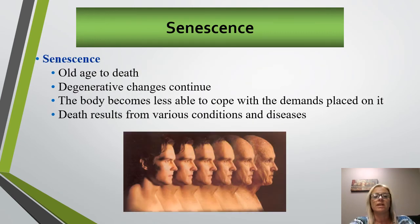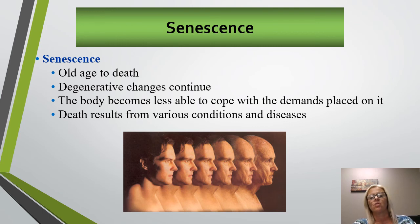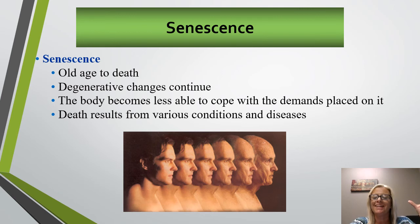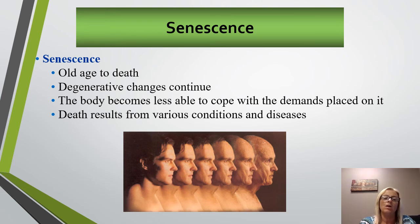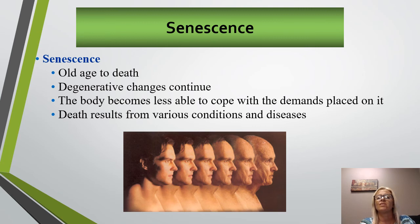The last stage is senescence — old age until death — the result of normal wear and tear of body parts over the years. Cartilage at the joints begins to disappear and disintegrate, causing stiff, painful joints. Gas exchange and blood circulation become poor. Metabolic rate changes. Immunity and repair responses get weaker. Death usually results not from the degenerative changes themselves, but from some mechanical disturbance in the cardiovascular system, a failure of the immune system, or a disease process affecting a vital organ.